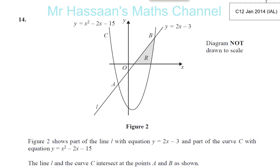Question number 14 tells us that you have a part of a line L with equation y equals 2x minus 3 and a curve with equation y equals x squared minus 2x minus 15.